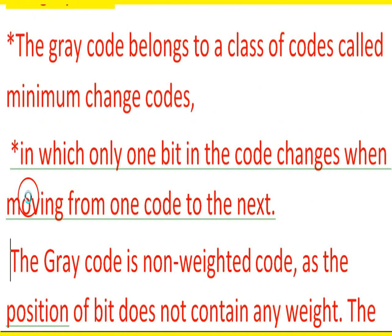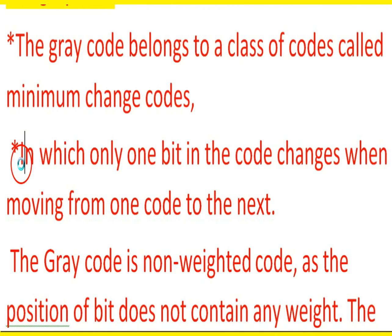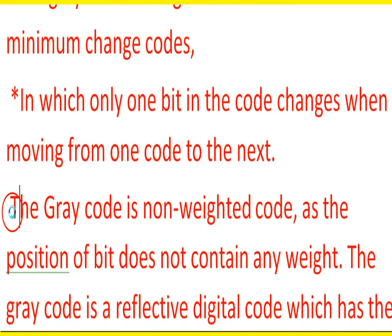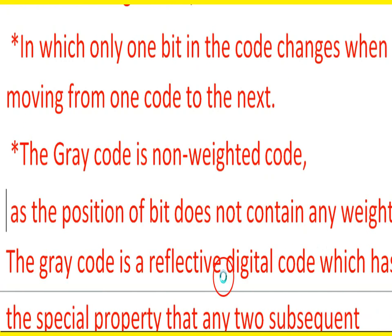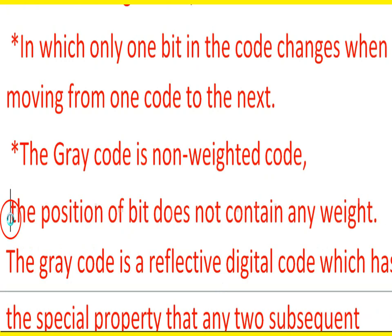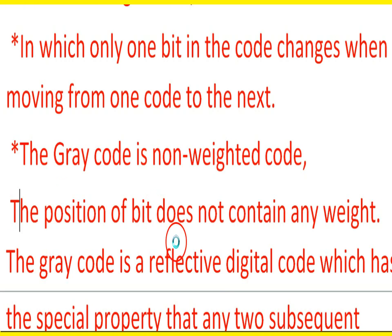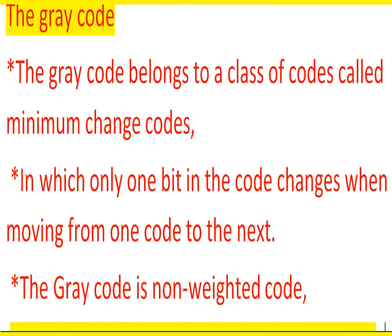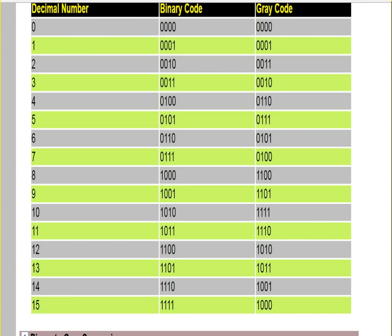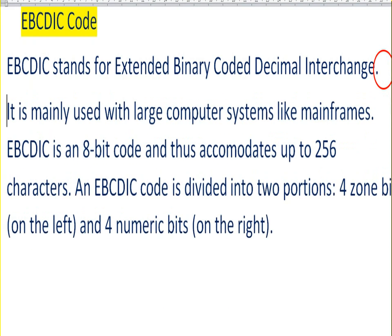In Grey code, only one bit changes when moving from one code to the next. It is also a non-weighted code — it does not contain any weight. Here is a table showing the decimal numbers, binary, and Grey code.